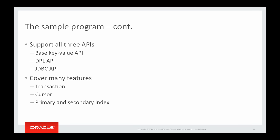The sample program implements the same application using all three APIs, and it covers many Berkeley DB features like transactions, cursors, and primary and secondary indexes.